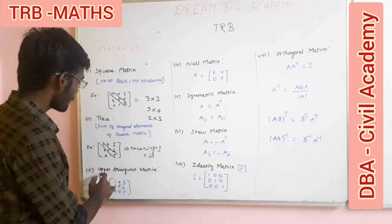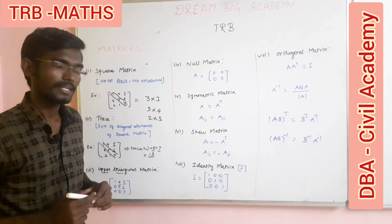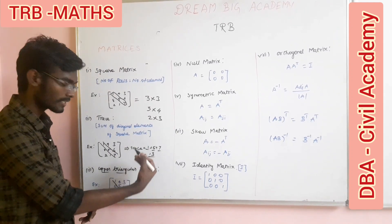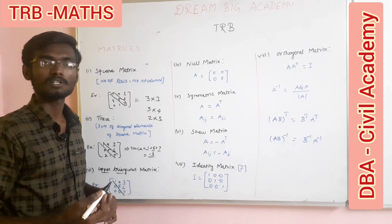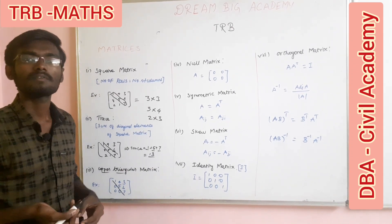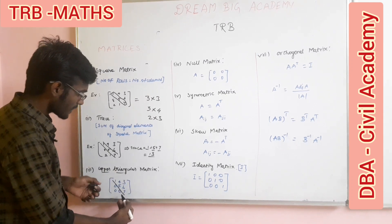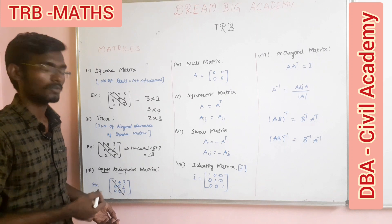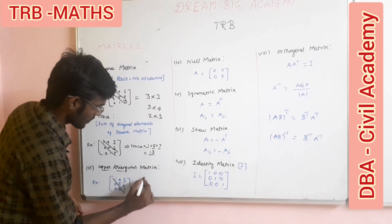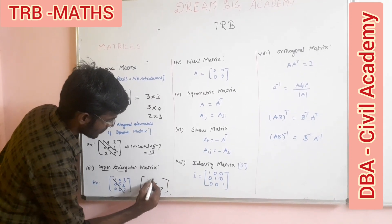Next is the Upper Triangular matrix. If we look at the main diagonal elements, you can write numbers above or on the diagonal. Below the diagonal, all elements will be zero. That is the upper triangular matrix.